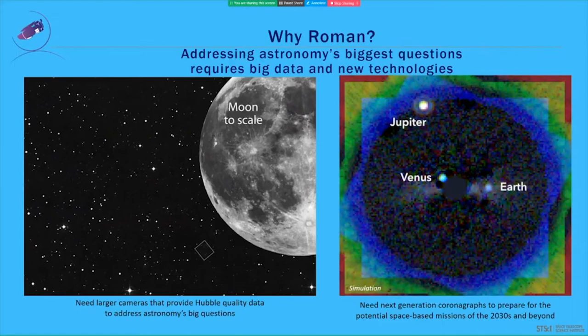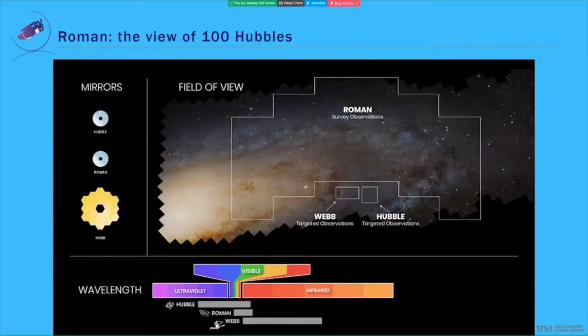Here is a comparison of the Nancy Grace Roman Space Telescope with the Hubble Space Telescope and the James Webb Space Telescope. Each of these telescopes have unique capabilities that the others do not have. For example, Webb has a larger mirror and can observe light well into the infrared part of the spectrum, which is great for observing the faintest objects in the universe. Hubble observes many types of light, including ultraviolet light. Hubble provides a key window into the ultraviolet universe. Now draw your attention to the top of the slide, which shows the field of views of each telescope.